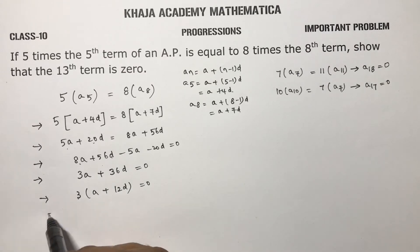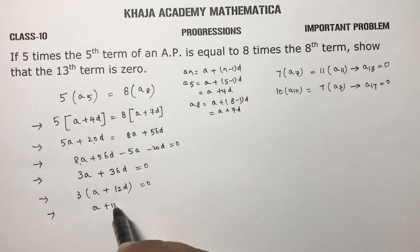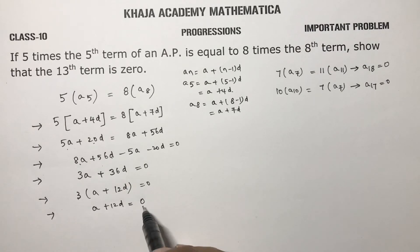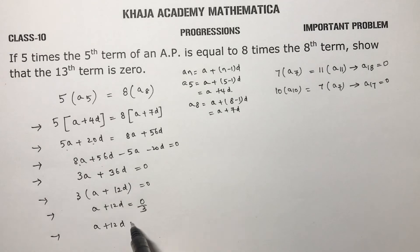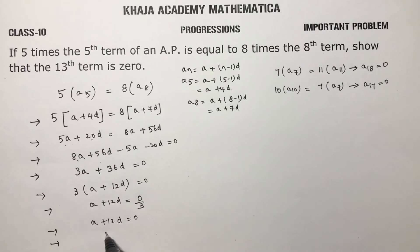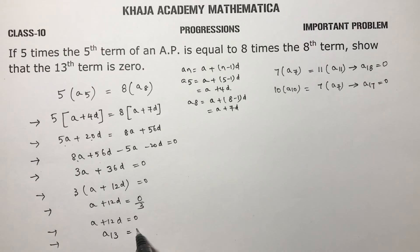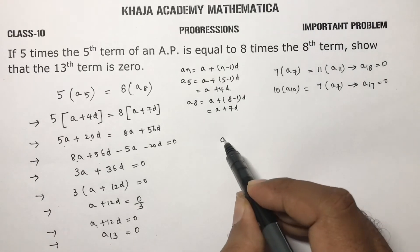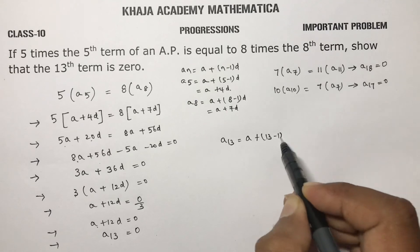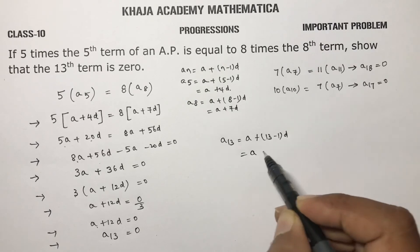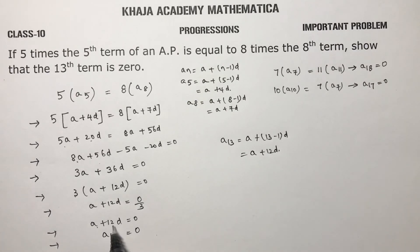If we transpose this 3, A plus 12D equals 0 by 3. So A plus 12D is 0. A plus 12D is nothing but A13. Because the 13th term is nothing but A plus 12D. A13 is A plus 13 minus 1 into D. So A plus 12D. So here you got A plus 12D is 0. So the 13th term is 0.